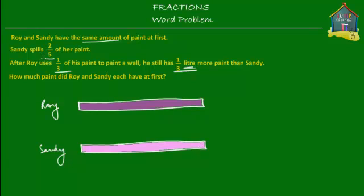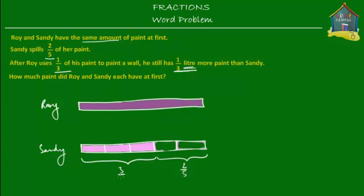Sandy spilled two-fifths of her paint, which means if the paint she had was divided into five equal parts, she spilled two out of those five parts. So let's suppose these last two parts are what she spilled — we'll remove the paint from those two blocks to show she doesn't have them anymore. So those two parts equal two-fifths, and what she does have is three parts, which equals three-fifths, because five minus two is three.